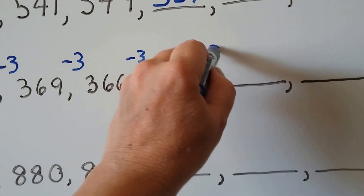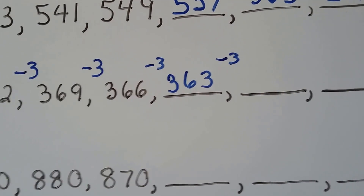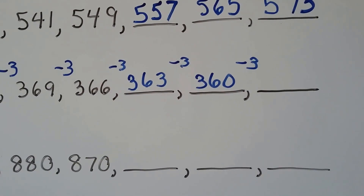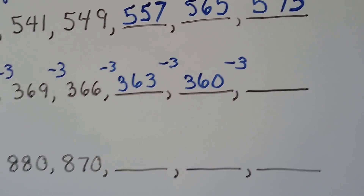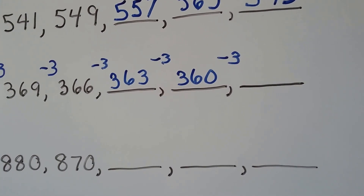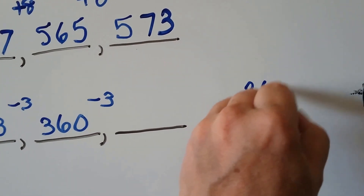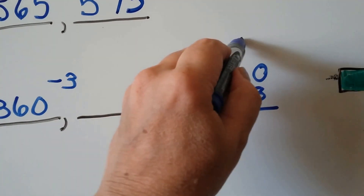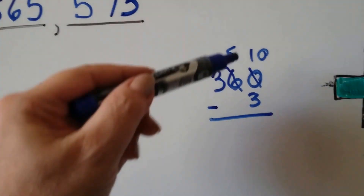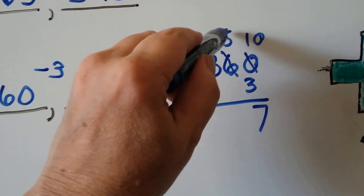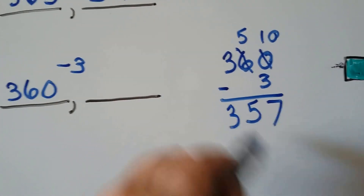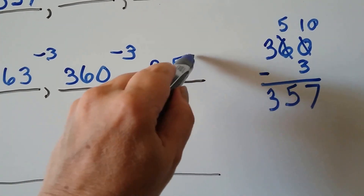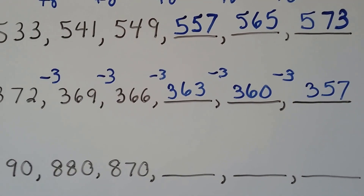Minus 3 again: 363 minus 3 is 360. Minus 3 again — this one's harder because 360 minus 3 means we can't take 3 from 0. We have to regroup: the 6 becomes a 5, the 0 becomes a 10, and 10 minus 3 is 7. So the next number is 357. The pattern was minus 3, minus 3, minus 3.